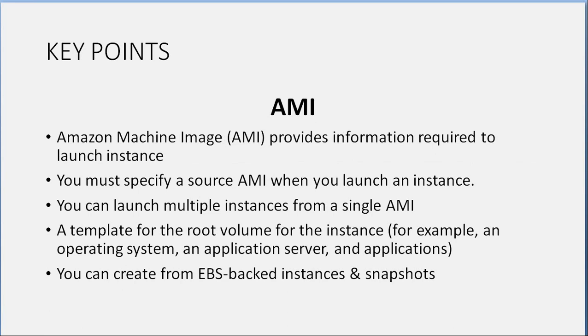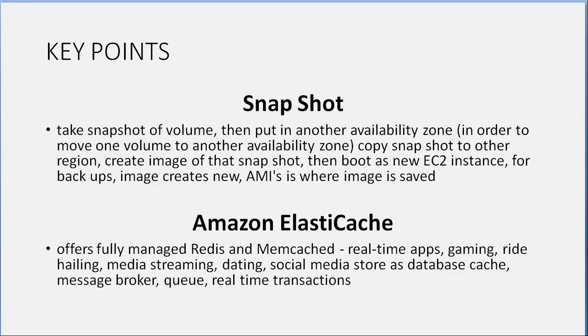AMI (Amazon Machine Image): provides information required to launch an instance. You must specify a source AMI when launching an instance, and you can launch multiple instances from a single AMI — it's a template for the root volume including the operating system, application server, and applications. You can create AMIs from EBS-backed instances and snapshots. To move a volume to another availability zone: take a snapshot, put it in another AZ. Copy the snapshot to another region, create an image from the snapshot, then boot as a new EC2 instance.